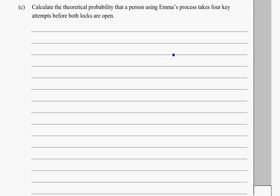Alright, so the last question in the Year 13 probability sample exam. Calculate the theoretical probability, so this is question 3C, that a person using Emma's process takes four key attempts before both locks are open.